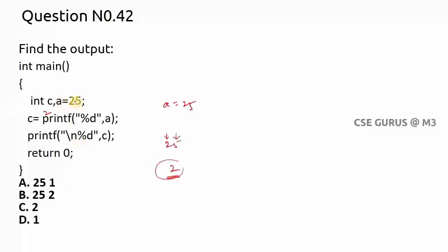For example, if you have something like 356, that is totally three symbols, so it will consider the count of number of symbols. Here c value becomes 2. So printf("%d", c) — what is c value? 2. So it prints first a then c, that is 25 and 2. The answer is B.